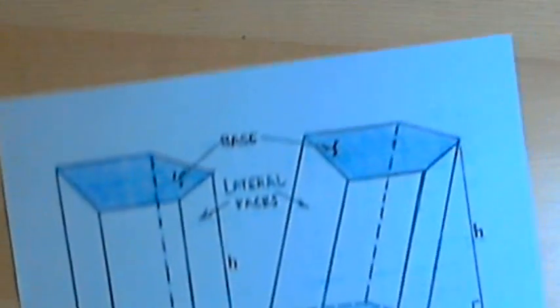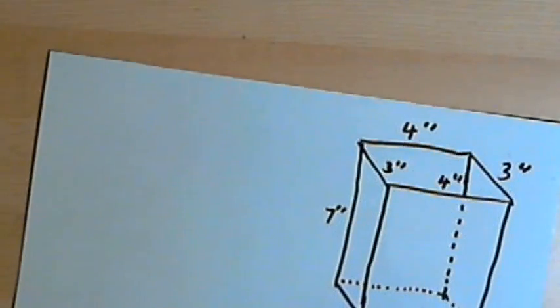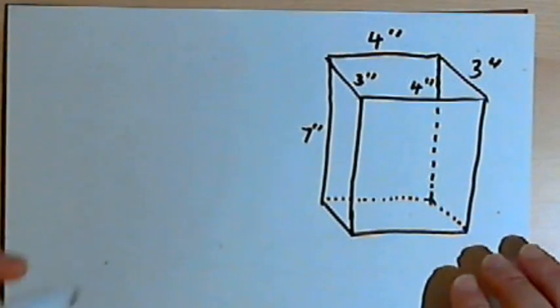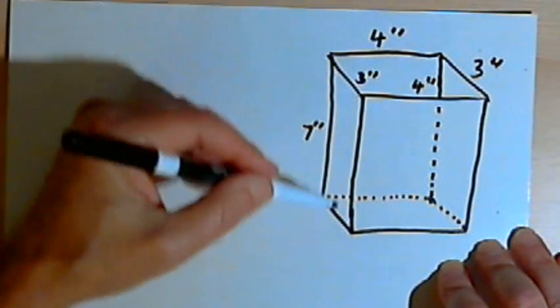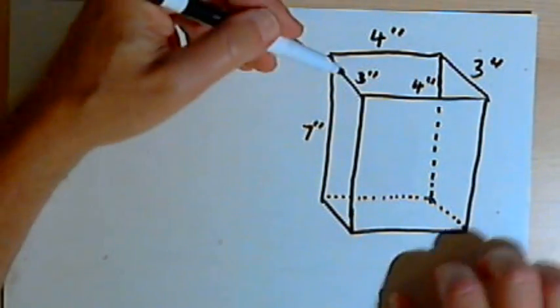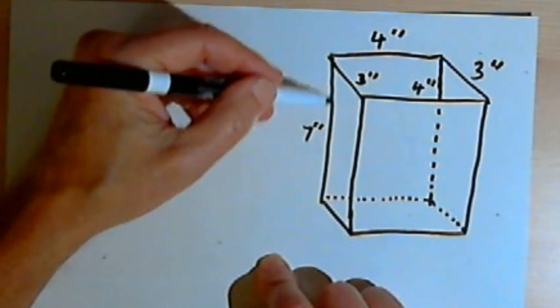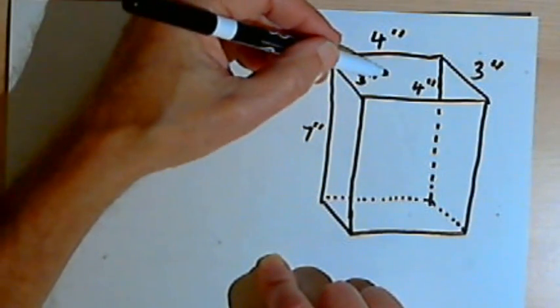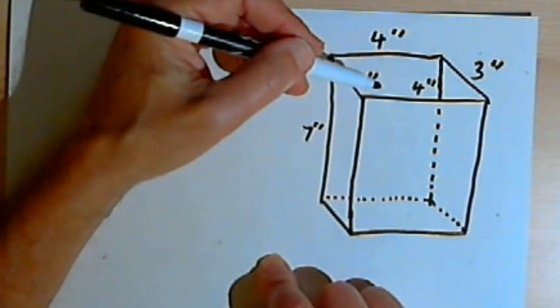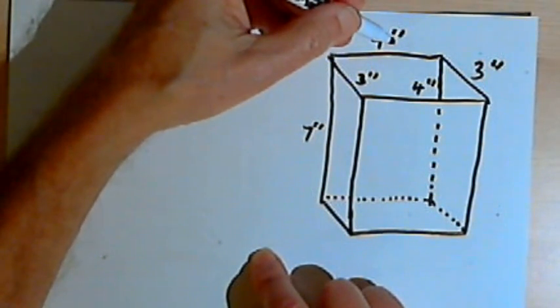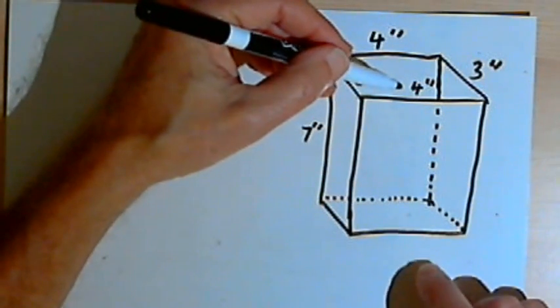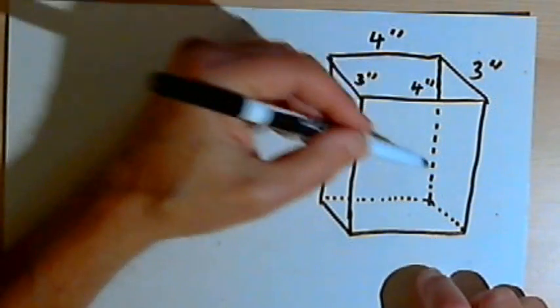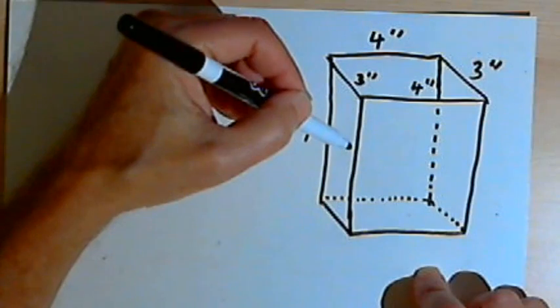Here's the first example. In this case I've got a rectangular prism, it's a right prism, and its height is 7 inches, and the two bases are rectangles that have dimensions of 3 inches by 4 inches. We want to find the surface area. That's going to mean the surface area for the two bases plus the four lateral sides.